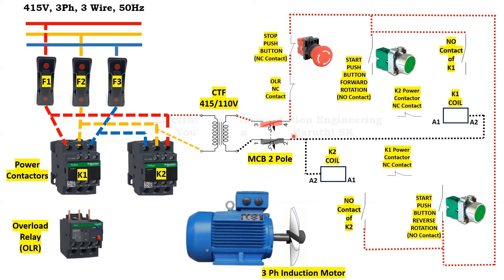After closing the MCB, the neutral extends up to the K1 power contactor's A2 terminal and K2 power contactor's A2 terminal. The phase extends from the overload relay NC contact — since the overload relay has not tripped, the phase passes through to the stop push button NC contact. The stop push button is not pressed, so phase extends to the forward rotation start push button NO contact. Since it is not pressed, supply is not extended. Similarly, the K1 NO contact and K2 NO contact are open as both contactors are off.